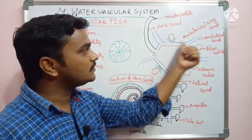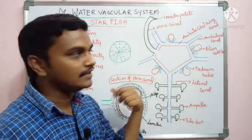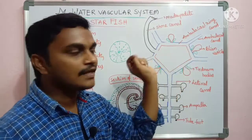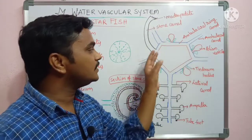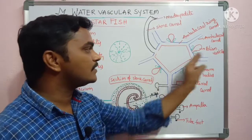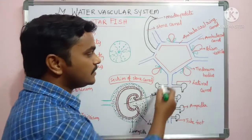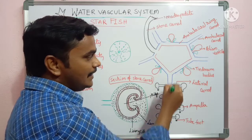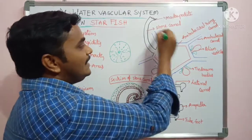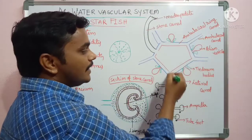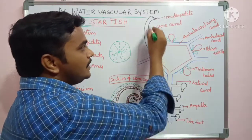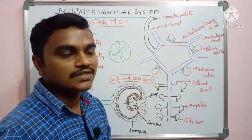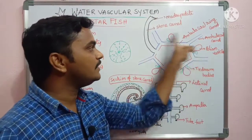The central ring is called the ambulacral ring, also called the ring canal. From this ring canal there arise five canals — these are the radial canals. There are five radial canals in the sea star, one for each arm.